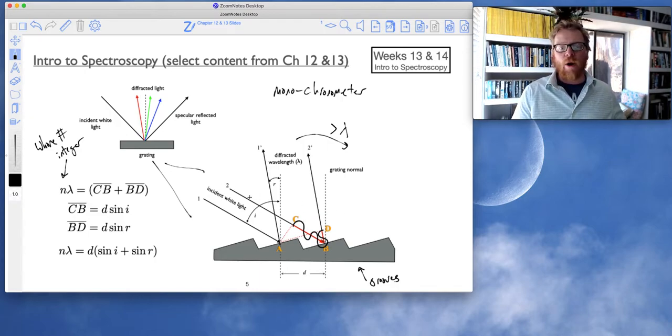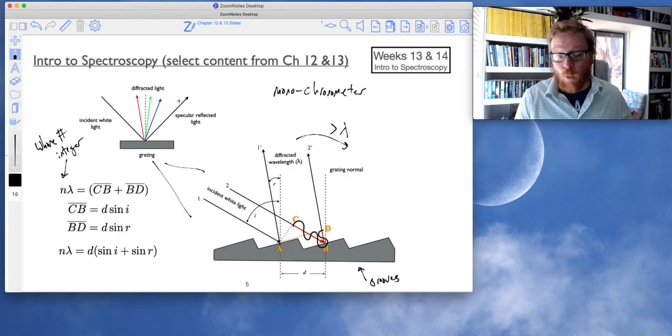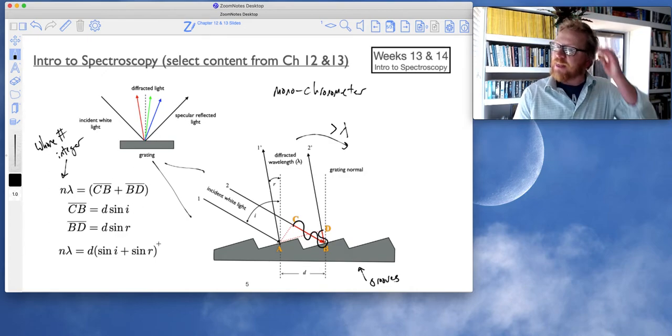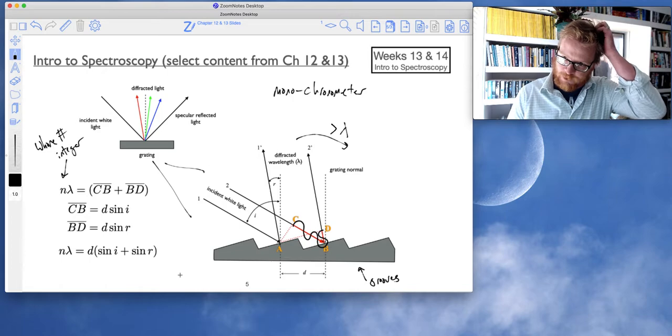And so, what ends up happening for a given constant angle of incidence, so we don't have to change that constant angle of incidence, we will automatically get several different wavelengths that satisfy this equation.